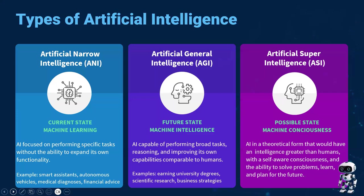The final type of AI is artificial super intelligence. This is a possible state of machine consciousness — a theoretical form of AI where it has an intelligence greater than humans, a self-aware consciousness, and the ability to solve problems, learn, and plan for the future.